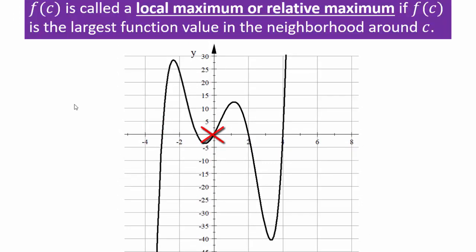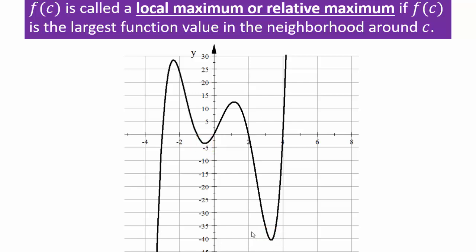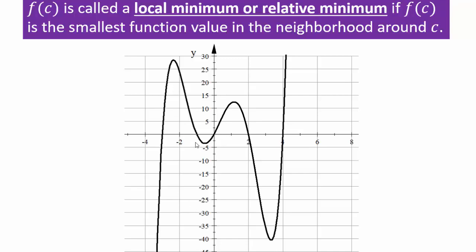A local maximum or relative maximum is the function value that is largest in a neighborhood. For example, in this neighborhood from negative 3 all the way to negative 1, at a little before negative 2, this point right here is a local maximum. And there's another one right there. Minimums would be like right here and right here — the lowest points in the neighborhood. These are not the absolutely lowest points, since the graph shoots down to negative infinity, but in the vicinity these are the highest and lowest points you see.